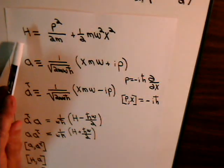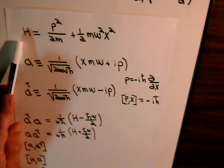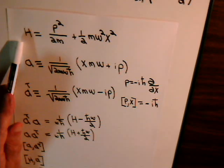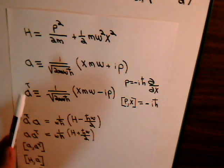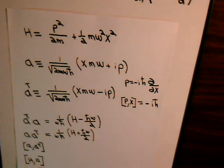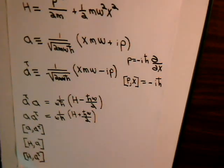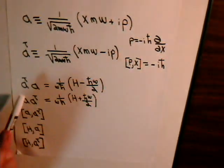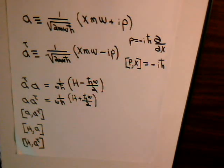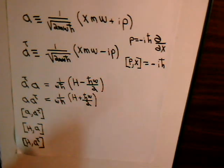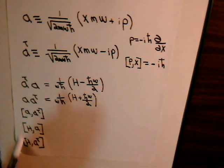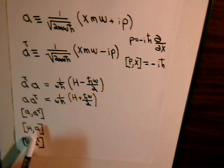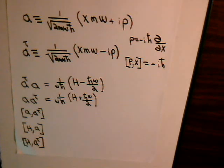This is the Hamiltonian for a one-dimensional quantum mechanical system. These are the new operators that we defined, and we were looking for expressions for a-dagger a and a a-dagger. Now I want to find expressions for these commutators: a a-dagger, the Hamiltonian with a, and the Hamiltonian with a-dagger. Let's see if we can find an expression for this.